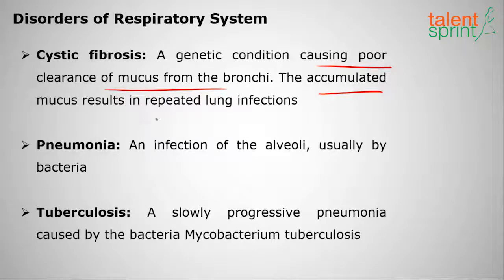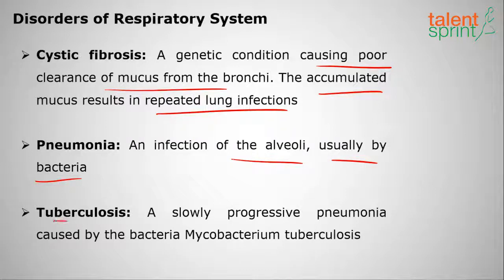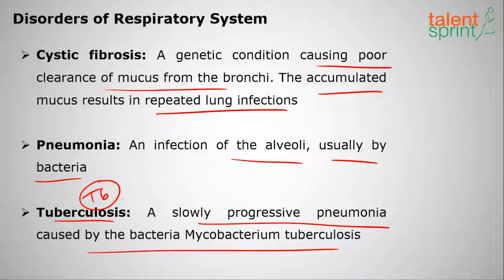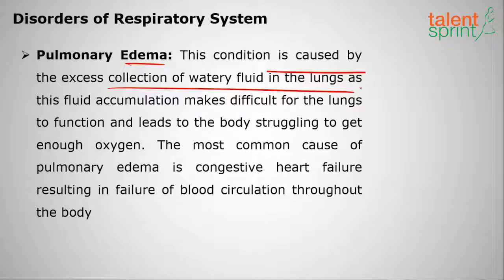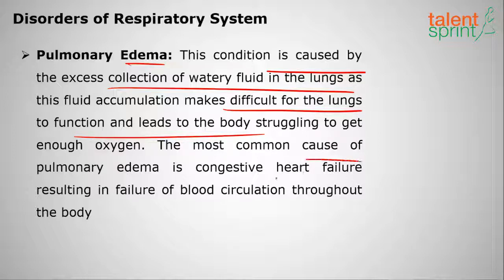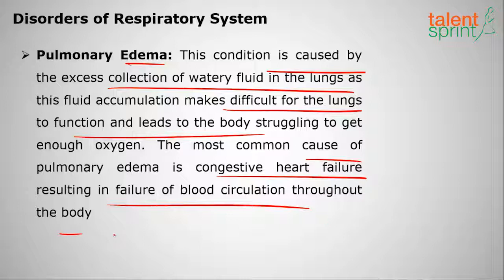Accumulated mucus in cystic fibrosis results in repeated lung infections. Pneumonia is an infection of the alveoli, usually by bacteria. Tuberculosis (TB) is a slowly progressive pneumonia caused by the bacterium Mycobacterium tuberculosis. Pulmonary edema is caused by excessive collection of watery fluid in the lungs; this fluid accumulation makes it difficult for the lungs to function and leads to the body struggling to get enough oxygen. The most common cause is congestive heart failure.